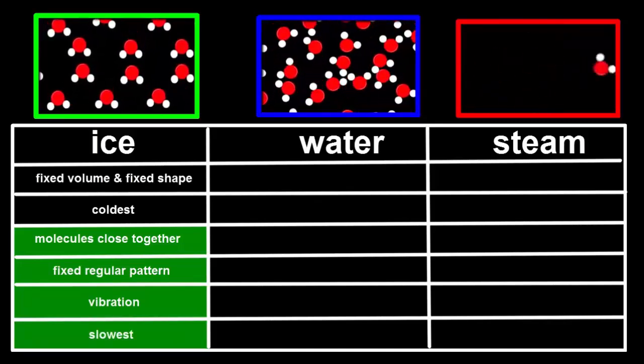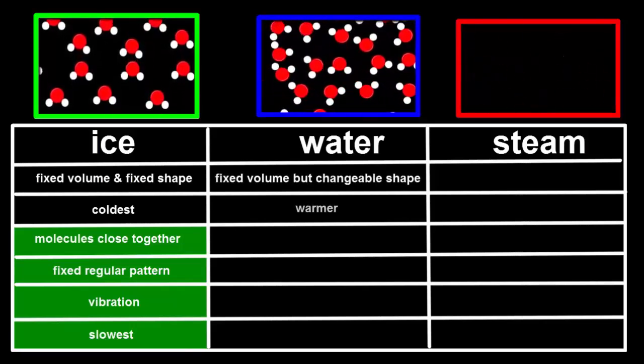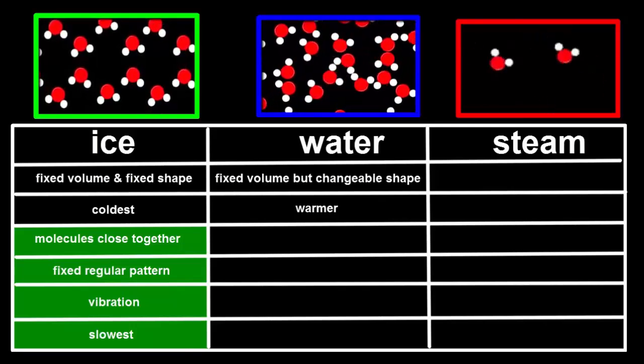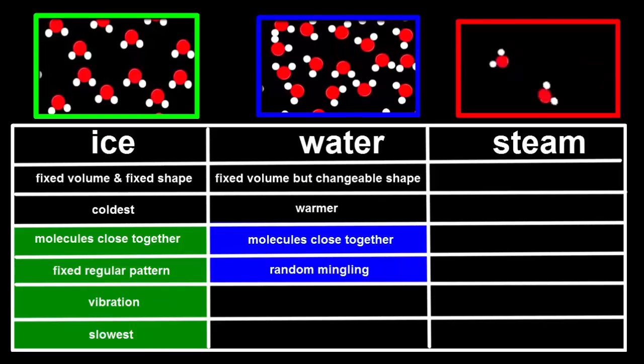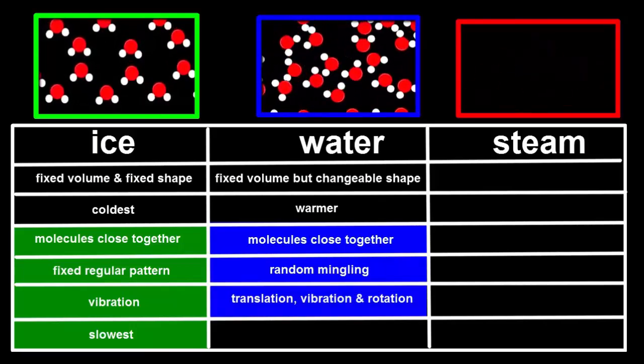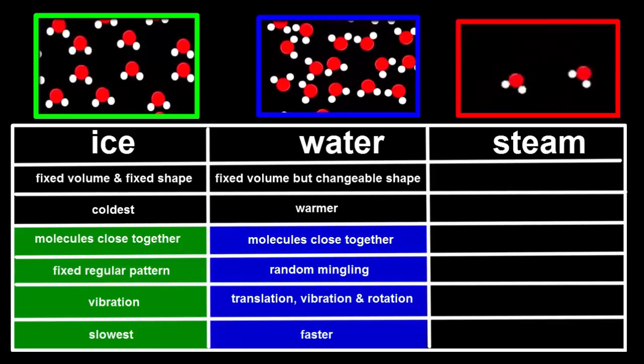We can see that liquids have a fixed volume, but a changeable shape, and they're warmer than the solid state. If we could see their molecules, they'd also be close together, but randomly mingling with each other, translating, rotating and vibrating, and moving faster than in solids.